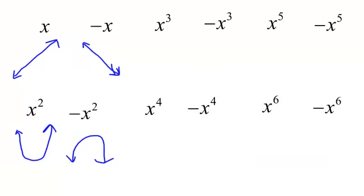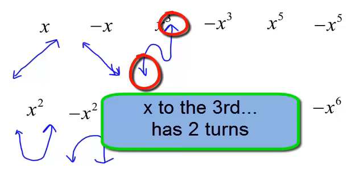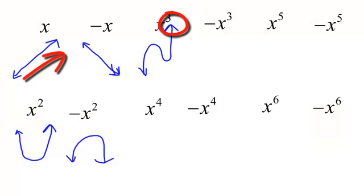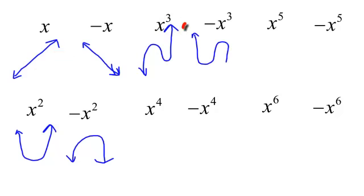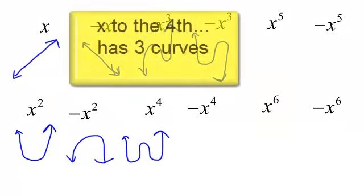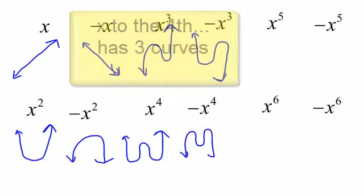X to the third has two curves. It starts low, it ends high — just like X to the first. A negative X to the third is going to start high, with two curves, and it's going to end low. X to the fourth has three curves. Negative X to the fourth also has three curves, but it will open down.